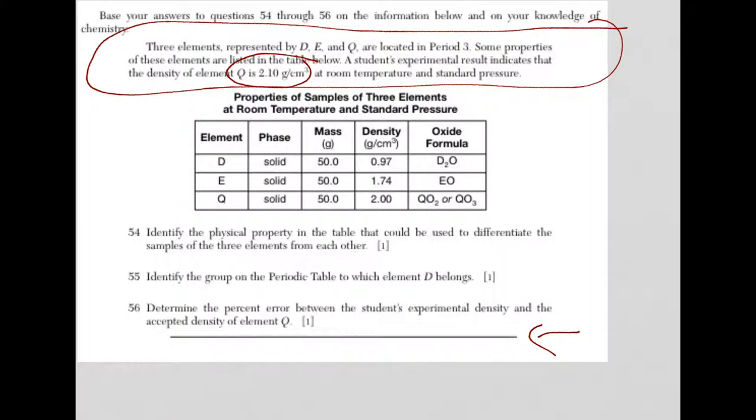Question 54 says identify the physical property in the table that can be used to differentiate the samples of the three elements from each other. Well, it can't be oxide formula - that's a chemical property. Bonding between atoms is chemical. So it's phase, mass, and density that's left. It can't be phase because they're all solids. It can't be mass - they're all 50 grams. So it has to be density. Your answer for 54 is density.